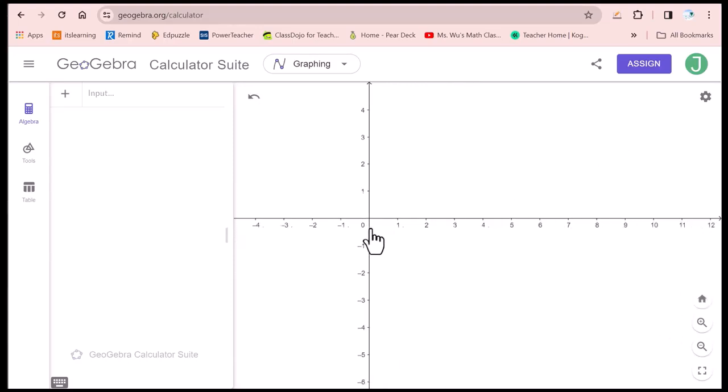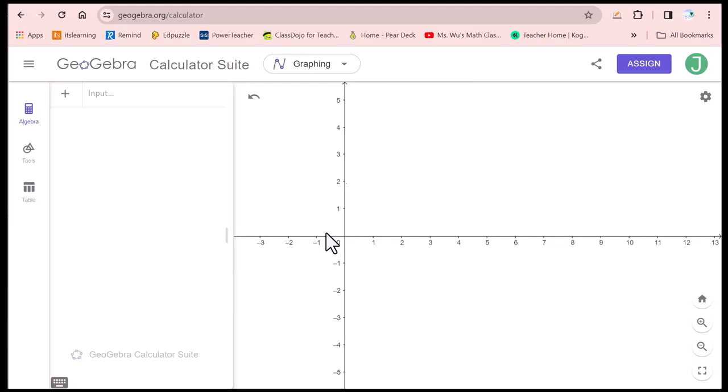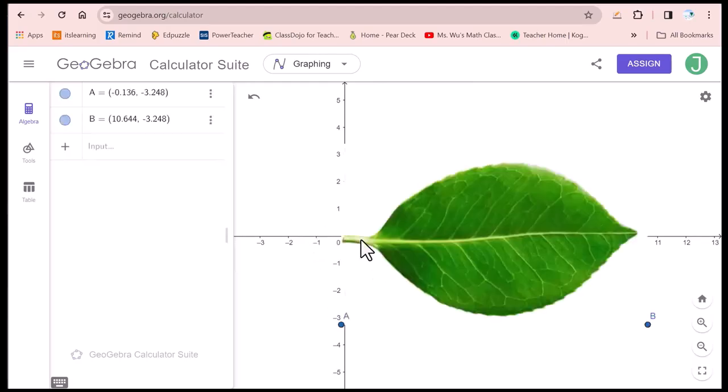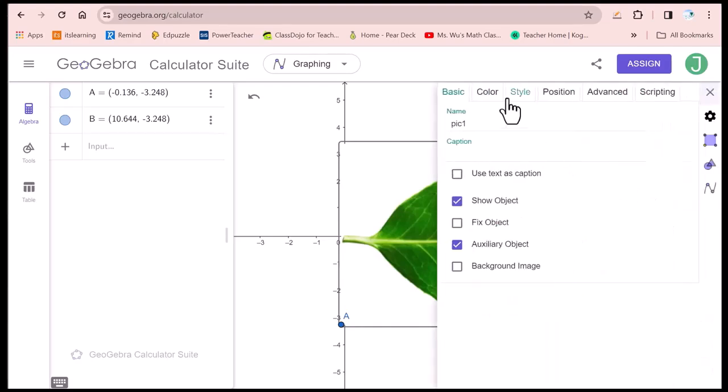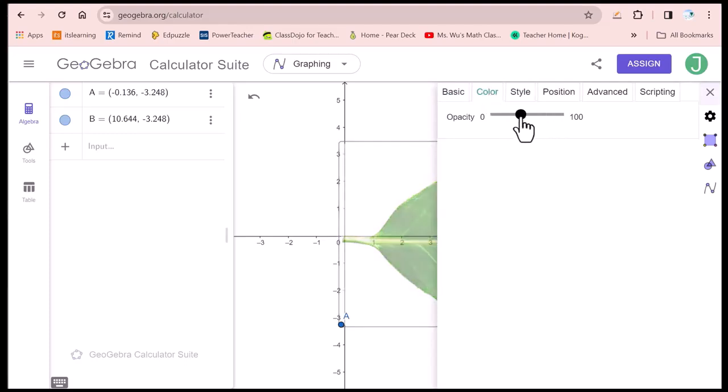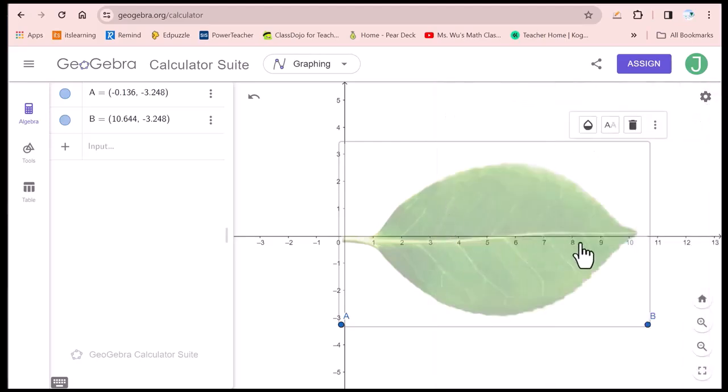Then you can move this coordinate plane to the left. Ctrl V paste. Click on this picture. Click here, setting. Color. Move this less than 50 so that we can clearly see the coordinates.